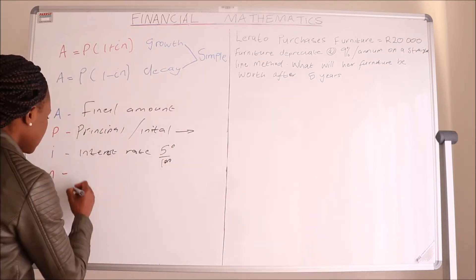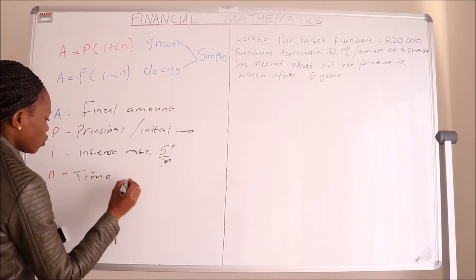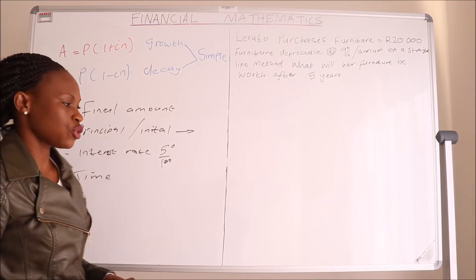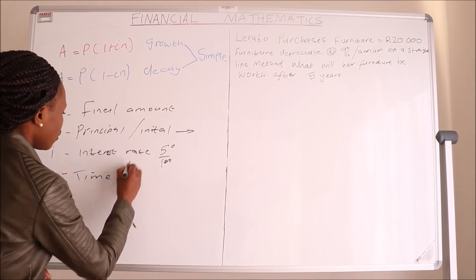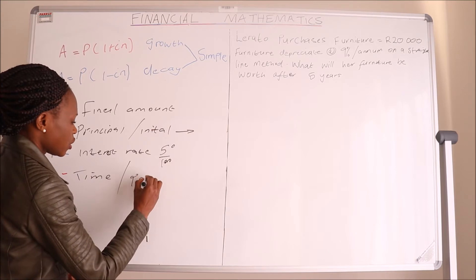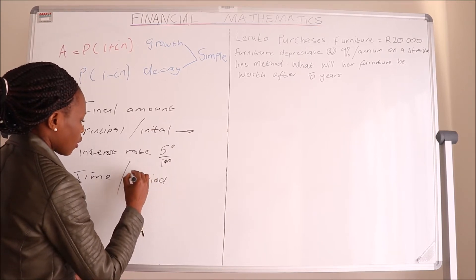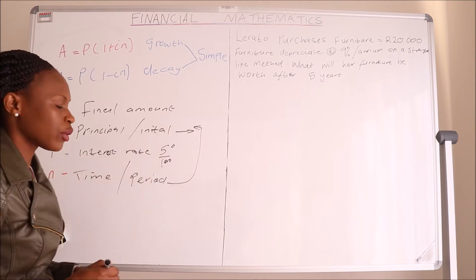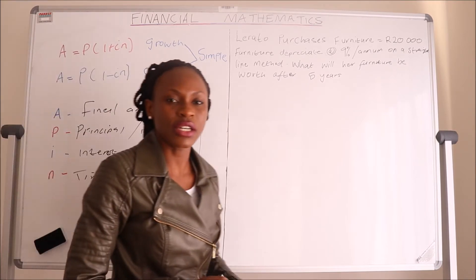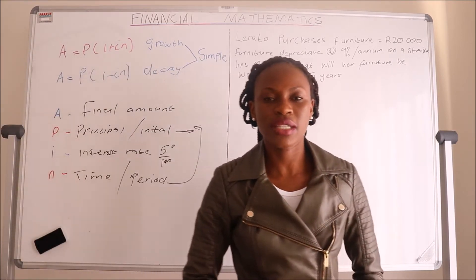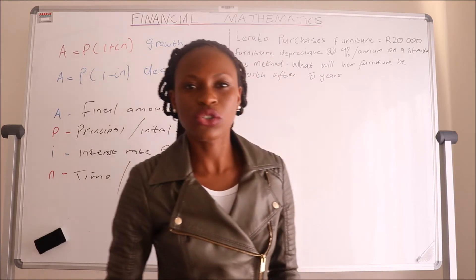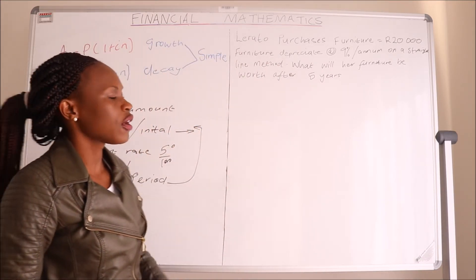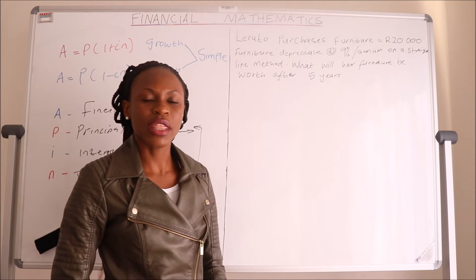N is the time, which is the period that you have invested or the period it will take to pay back for the goods you have purchased. Let's go straight into a question so we can see how to apply these equations to solve a Financial Mathematics problem.